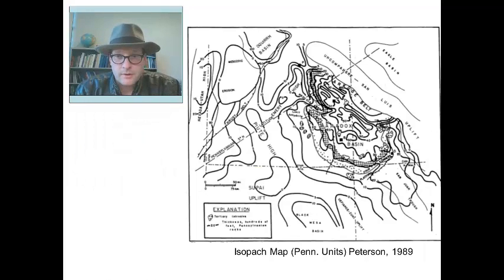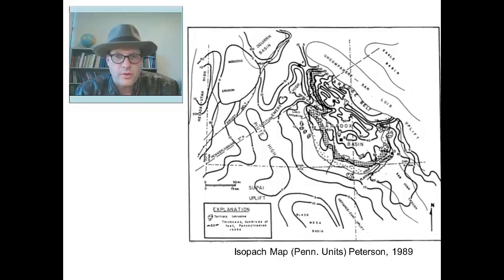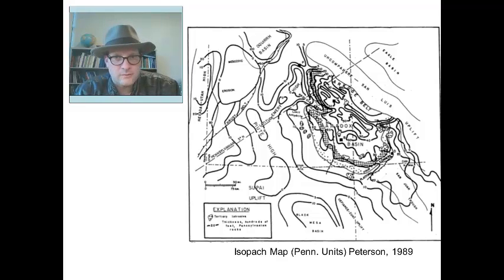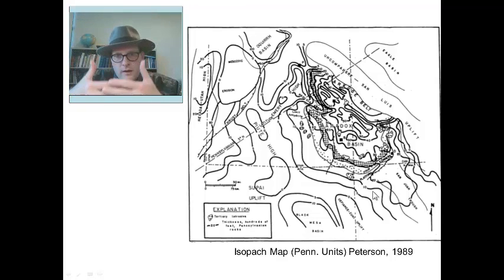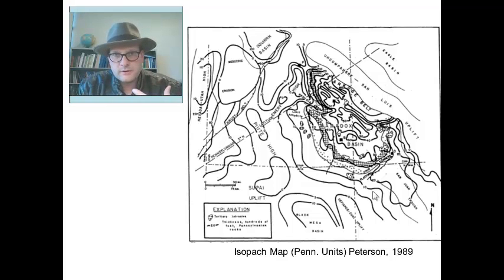Here's an isopac map of all of the rocks in the Four Corners region, and you can really see how thick the Paradox Basin is as you move northward. Then you reach the Uncompahgre uplift where there's nothing because it was all being eroded down, with arkosic material built on the edge. Then we get into our salt facies, and down on the margins of the basin is where we have the interfingering of the deeper parts of the basin with the shallower carbonate platform.